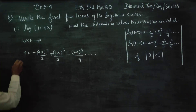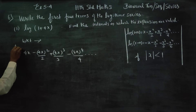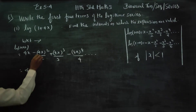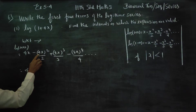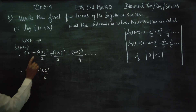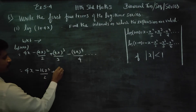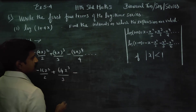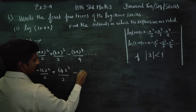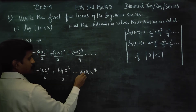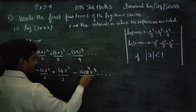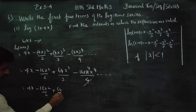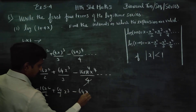So log(1 + 4x) equals: simplifying each term — 4x, then 4² is 16, so minus 16x² by 2, then 4³ is 64, so plus 64x³ by 3, then 4⁴ is 256 but after cancellation the answer is 4x minus 16x²/2 plus 64x³/3 minus 64x⁴, and it goes on.